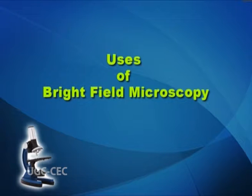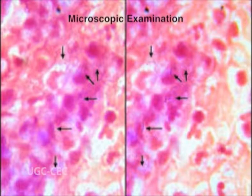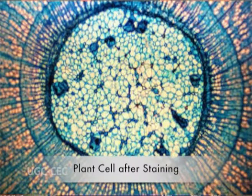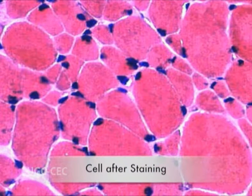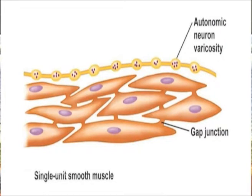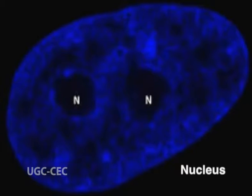Bright field microscopy is used in most disciplines where microscopic investigation is required. This technique can be used to view fixed specimens or live cells. Since many organic specimens are transparent, staining is required to cause the contrast that allows them to be visible under the microscope. Different stains and staining techniques are used depending upon the type of specimen and cell structure being examined. For example, fuchsin is used to stain smooth muscle cells, and methylene blue is used to stain cell nuclei.